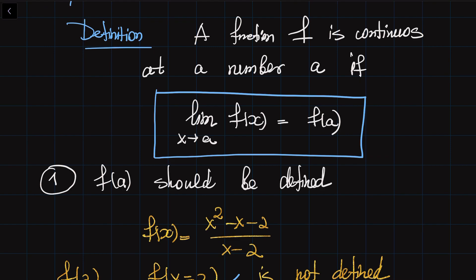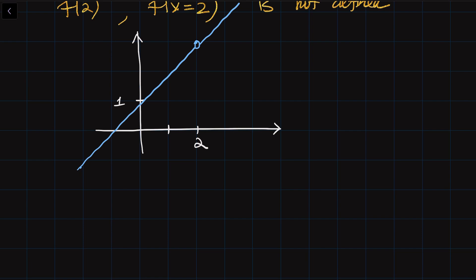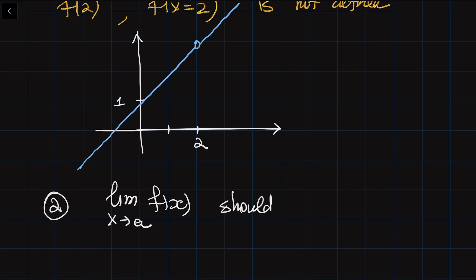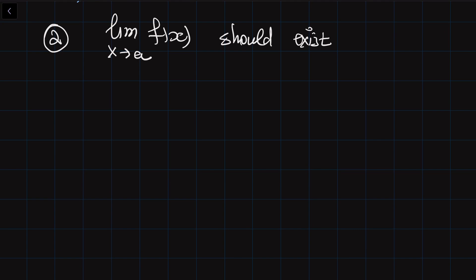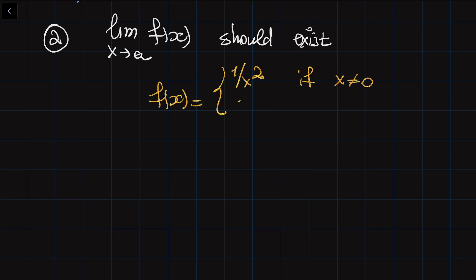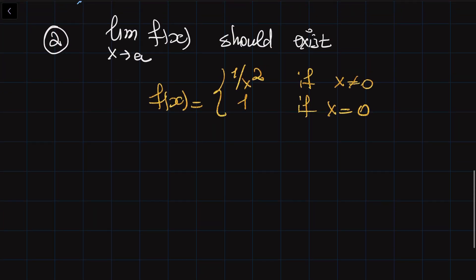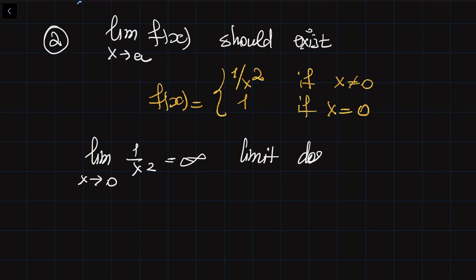The second implication tells us that the limit of f(x) as x goes to a should exist — essentially it should not be infinity. Consider the function f(x) equal to 1 divided by x squared if x is not equal to 0, and equal to 1 if x equals 0. The limit of 1 over x squared as x goes to 0 equals infinity, so the limit doesn't exist. Therefore, this function is discontinuous at x equal to 0.